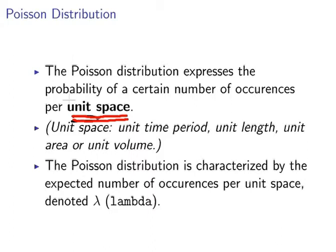The Poisson distribution is characterized by the expected number of occurrences per unit space and we denote this lambda. In R it's called lambda. I'm going to call it simply the Poisson mean.